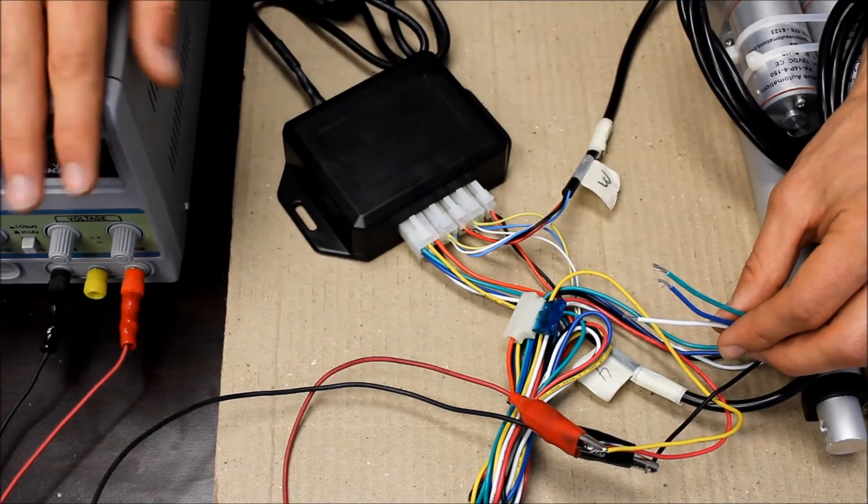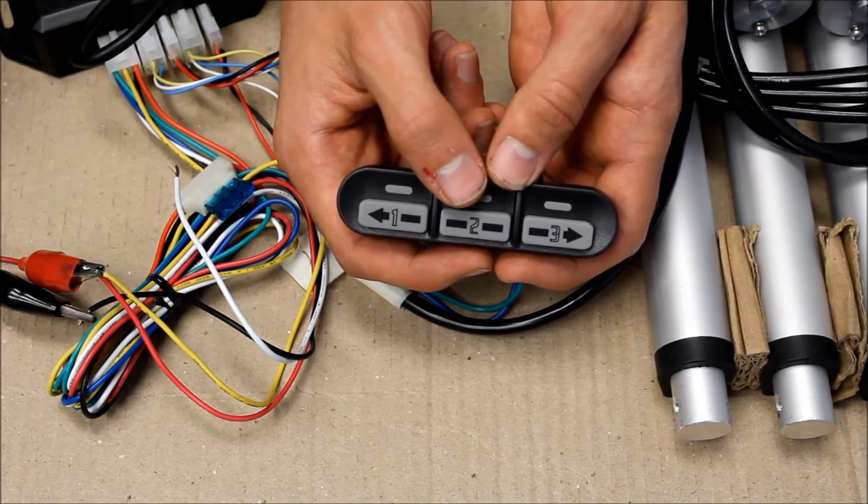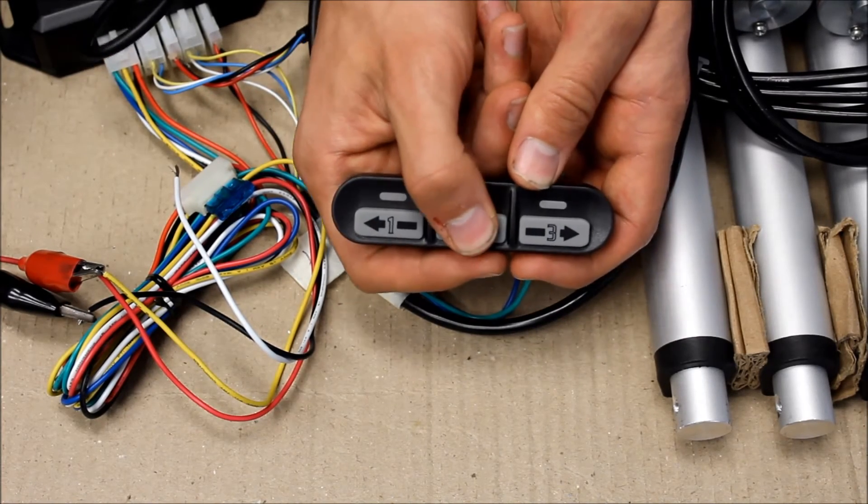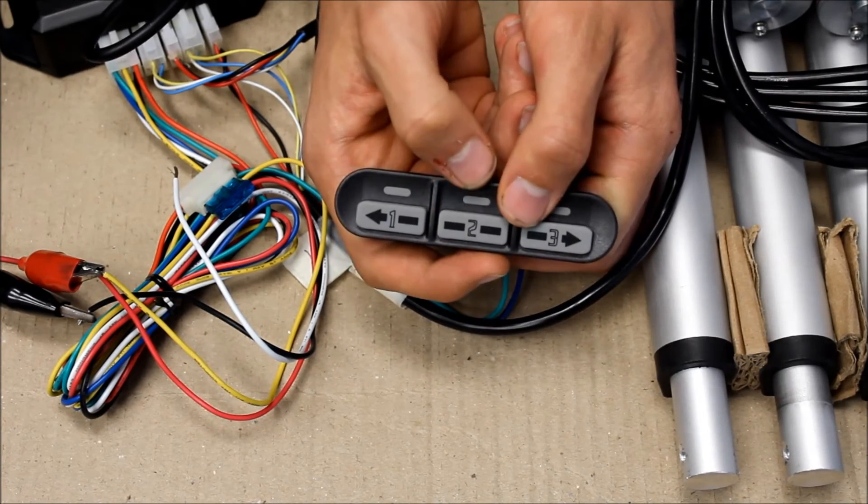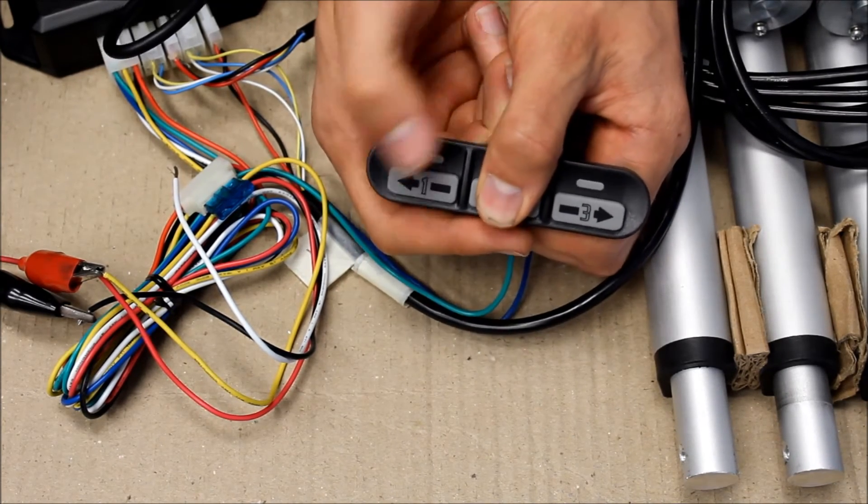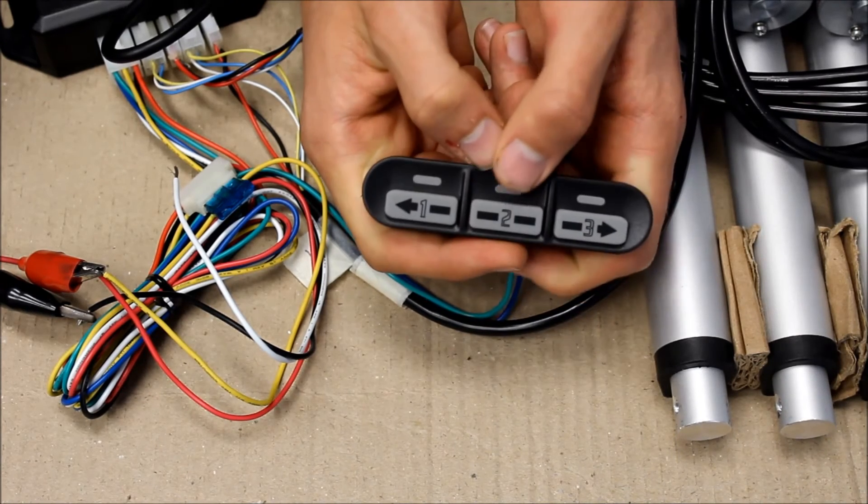Once we're all done, we can turn on our power supply. Once power is applied, we can use the control pad to move the actuators. By pressing the middle button and one button, the actuators will extend. By pressing the middle button and the other button, the actuators will retract.